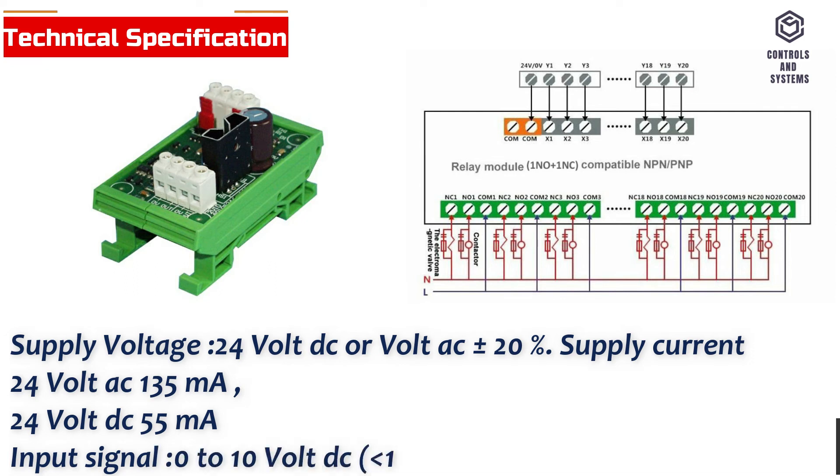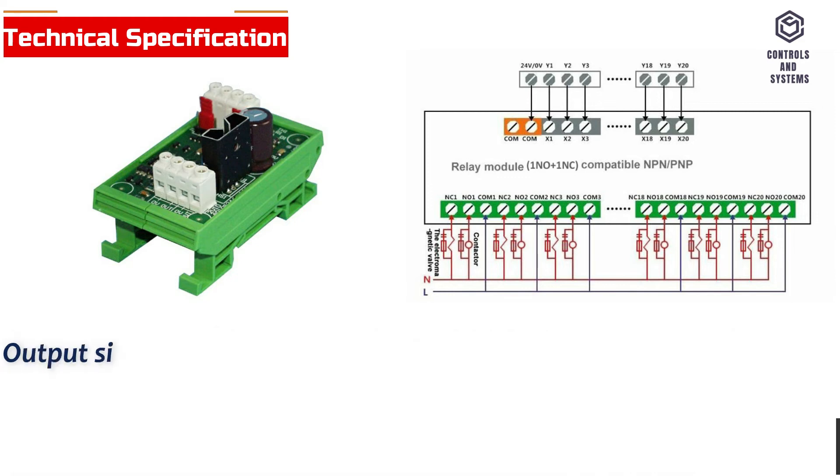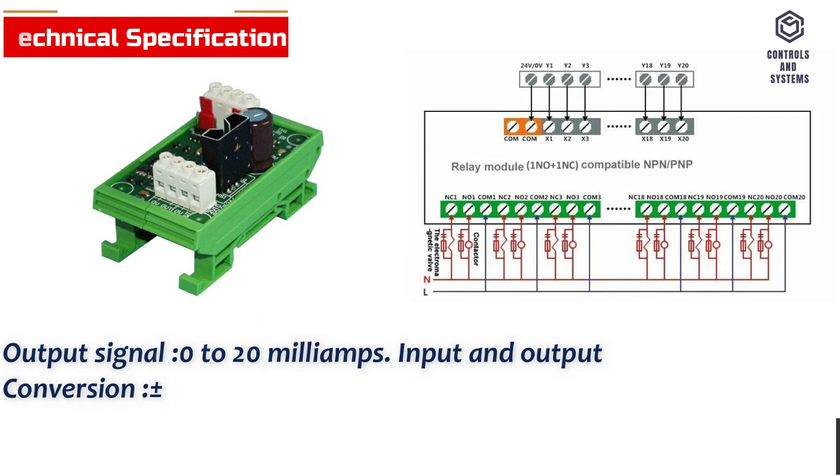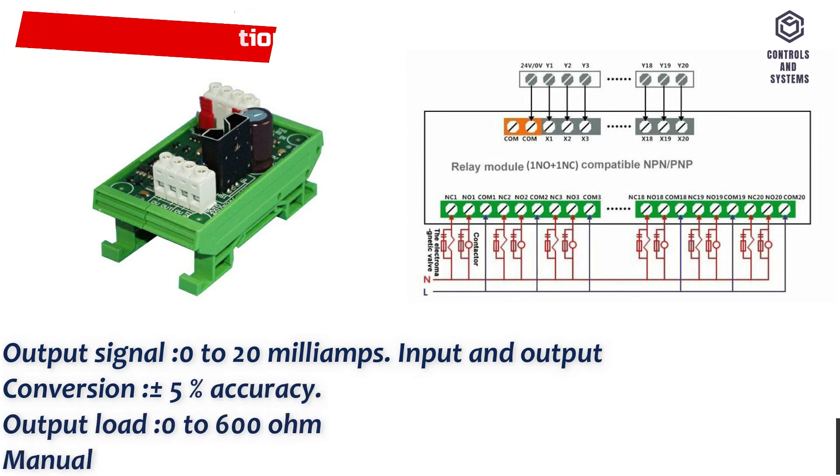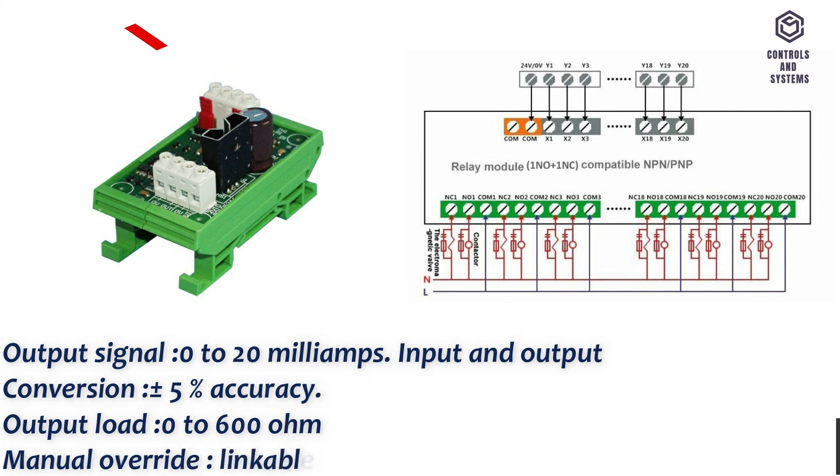Input signal 0 to 10 volt DC, less than 1 milliamp per channel. Output signal 0 to 20 milliamps. Input and output conversion plus minus 5% accuracy. Output load 0 to 600 ohm. Manual override linkable auto on/off.